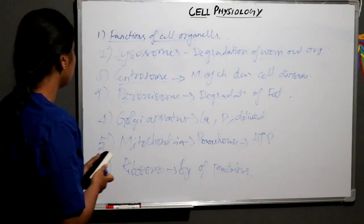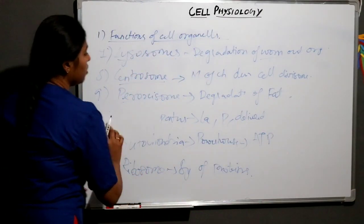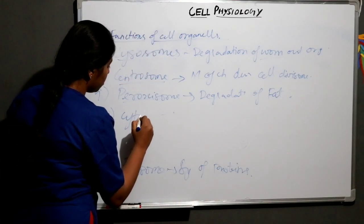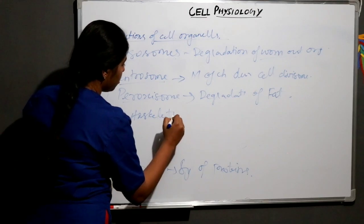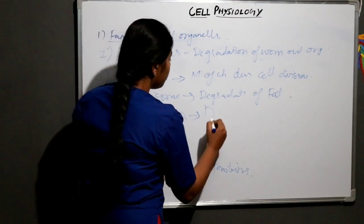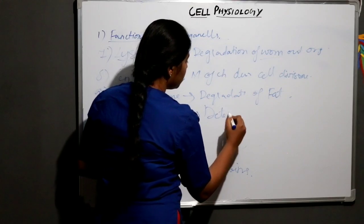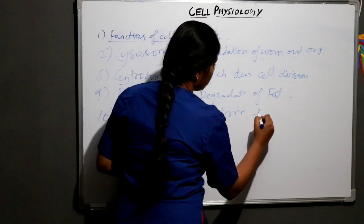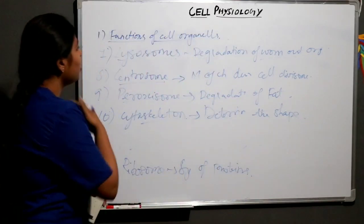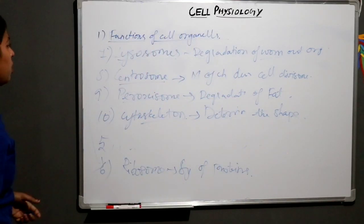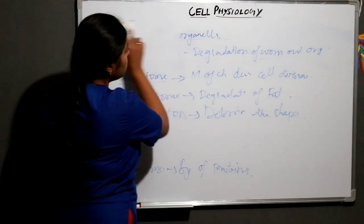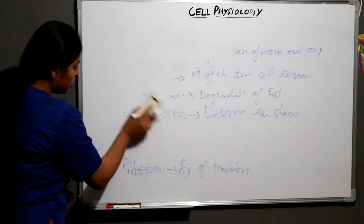Ninth one: peroxisome — peroxisome helps in degradation of excess fatty acids which are produced by the smooth endoplasmic reticulum. Last one: cytoskeleton — from the name 'skeleton' we know that it determines the shape of the cell. That's all about the functions of cell organelles. Now we'll go to the second topic.